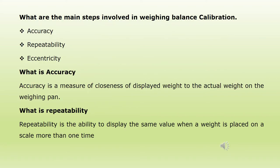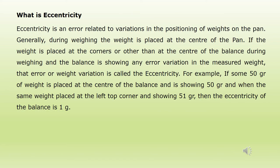What are the main steps involved in weighing balance calibration? The steps involved are verification of accuracy, repeatability, and eccentricity. What is accuracy? Accuracy is a measure of the closeness of the displayed weight to the actual weight on the weighing pan. What is repeatability? Repeatability is the ability to display the same value when a weight is placed on a scale more than one time. What is eccentricity? Eccentricity is an error related to variations in the positioning of weights on the pan.